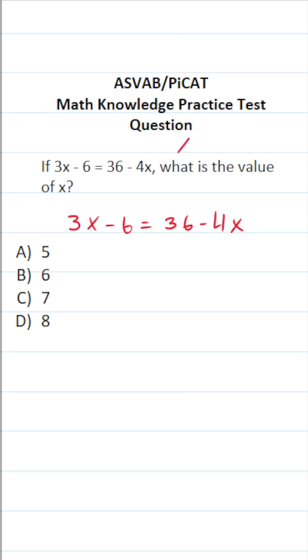We want to know the value of x, so in other words, we want to get x equal to something by itself. The first thing I'm going to do is add 4x to both sides of the equation. In doing so, this crosses out, 3x plus 4x is 7x. This becomes 7x minus 6 equals 36.